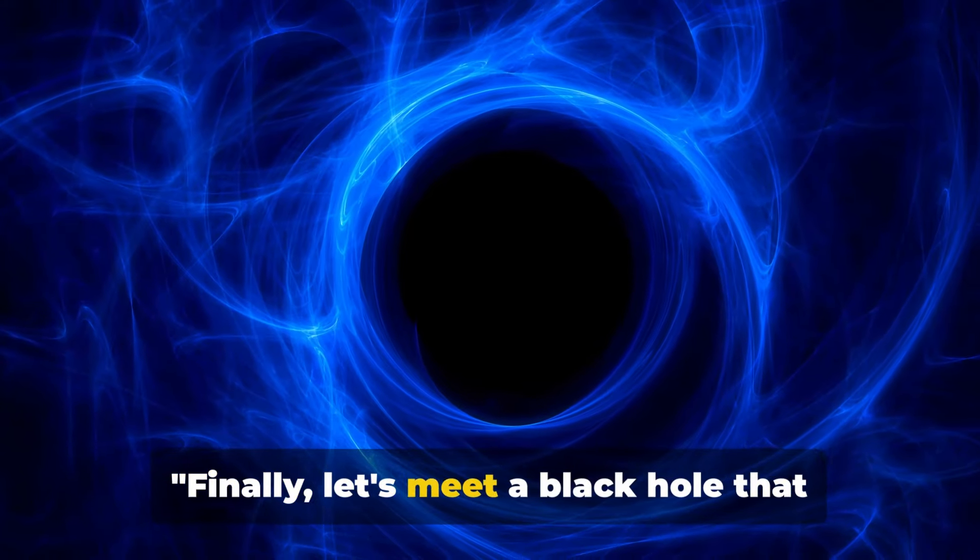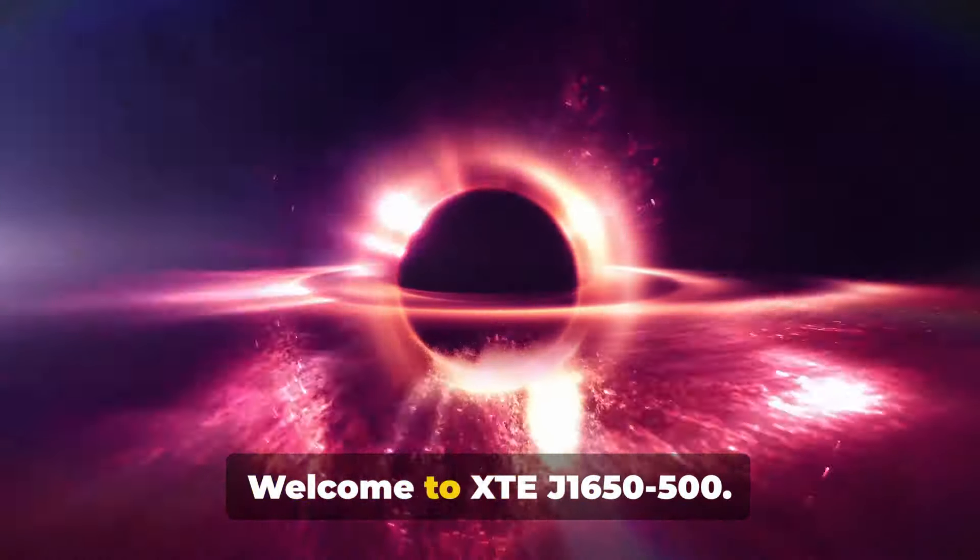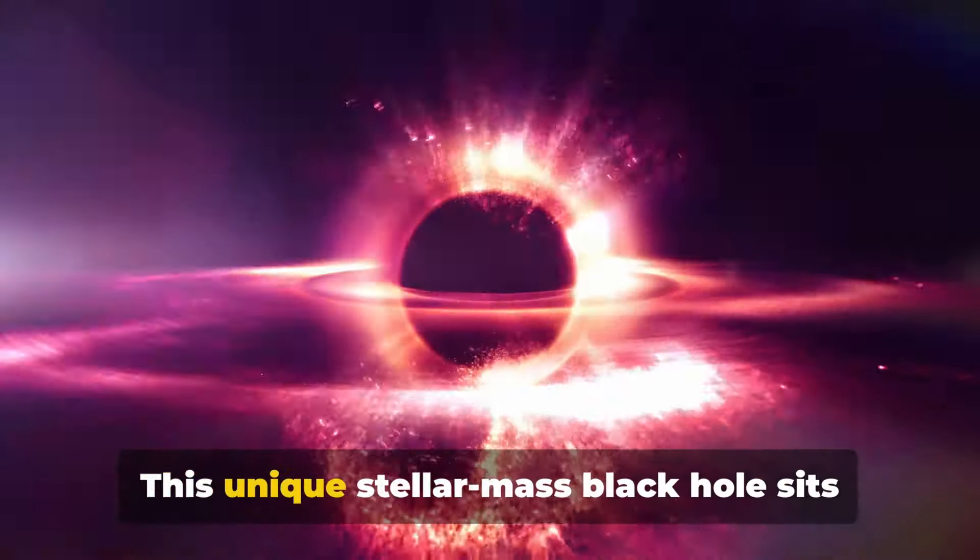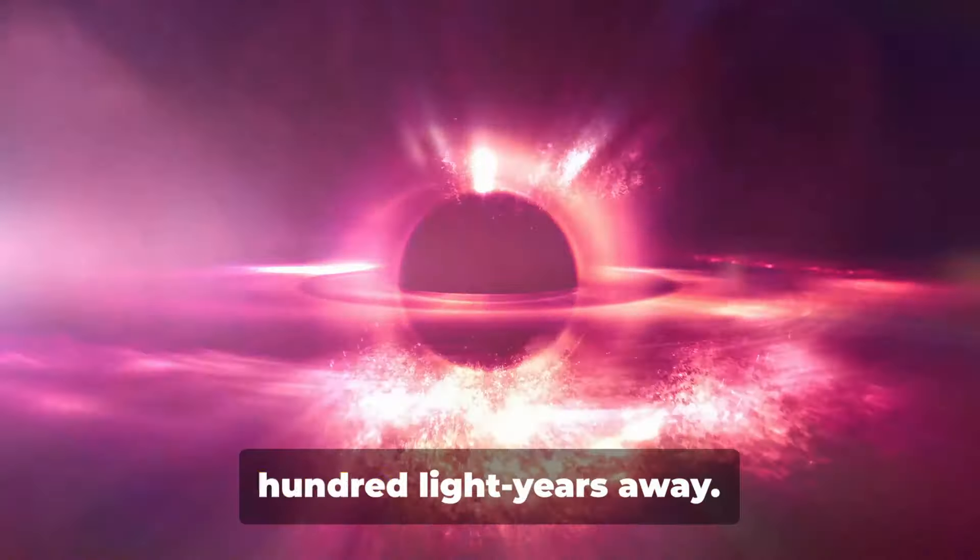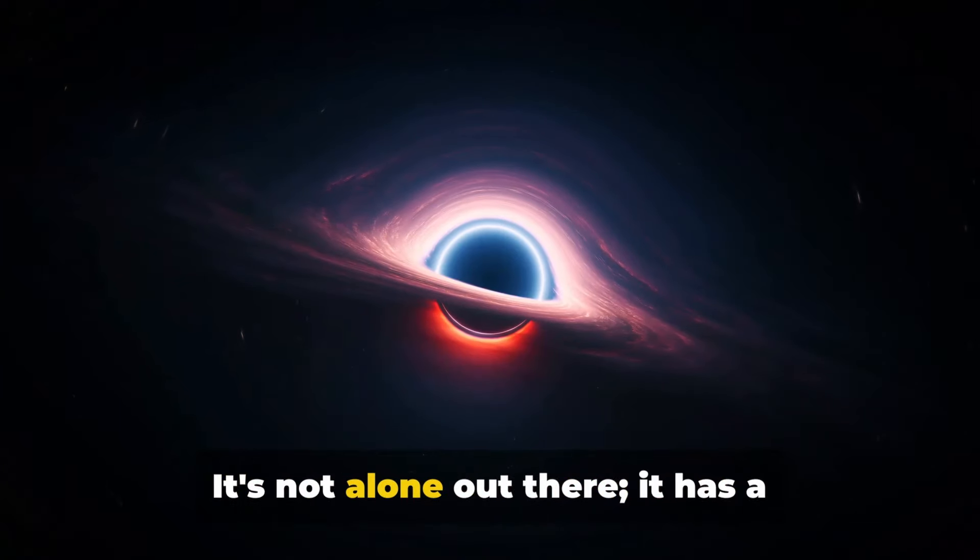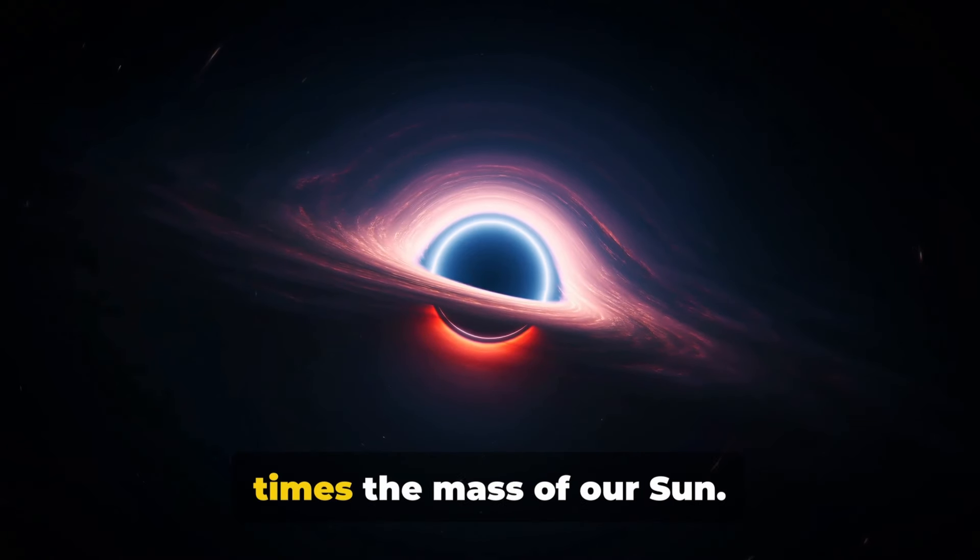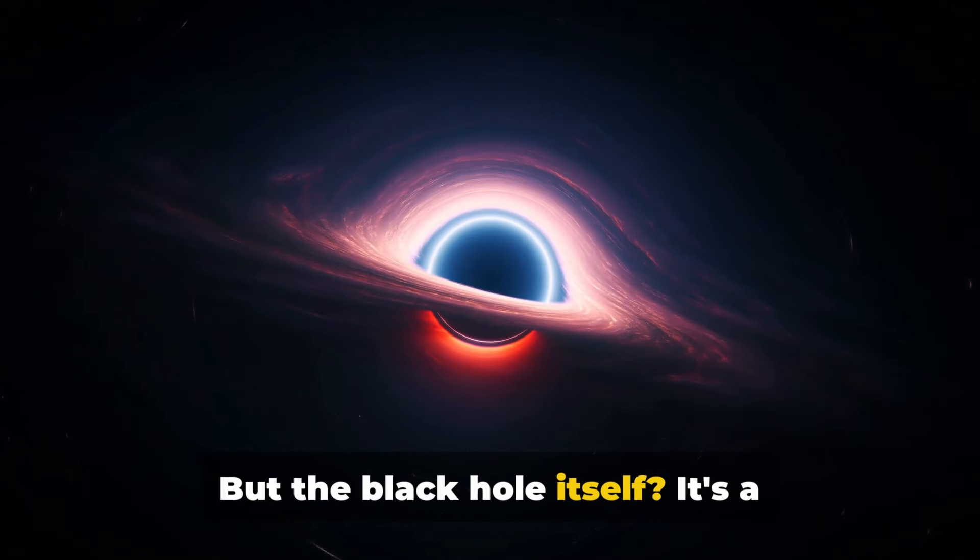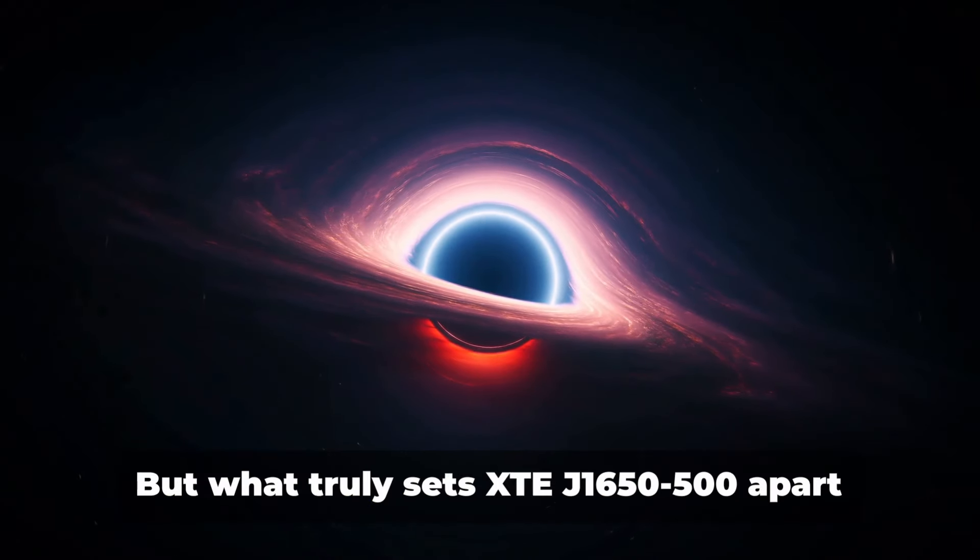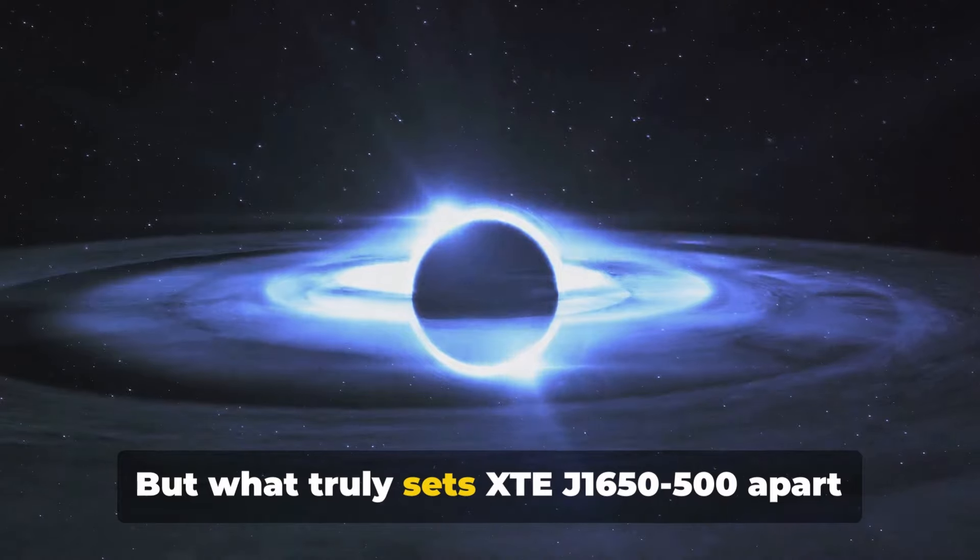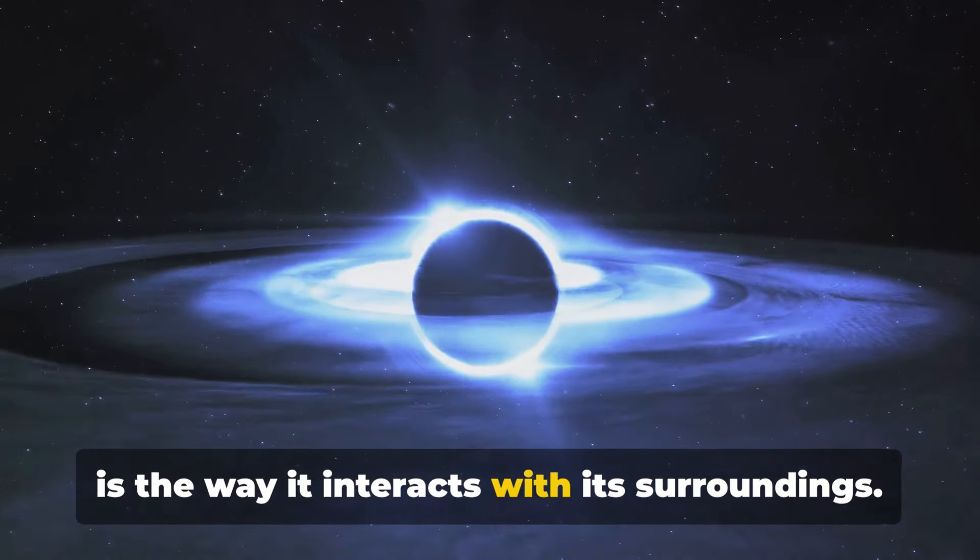Finally, let's meet a black hole that shoots out a wobbling jet. Welcome to XTEJ 165500. This unique stellar mass black hole sits comfortably around 3,300 light years away. It's not alone out there. It has a companion star that is about 0.7 times the mass of our sun. But the black hole itself? It's a heavyweight, coming in at 9 times the sun's mass.